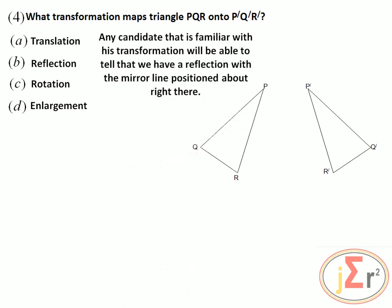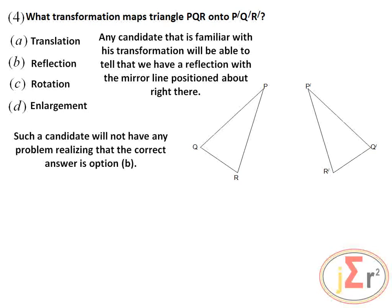Any candidate familiar with transformations will be able to tell that we have a reflection, with the mirror line positioned about right there. Any candidate familiar with transformation should look at this and say that's a reflection, with the mirror line located around that spot. Such a candidate will have no problem realizing that the correct answer is option B.